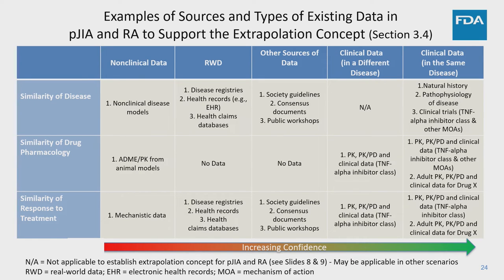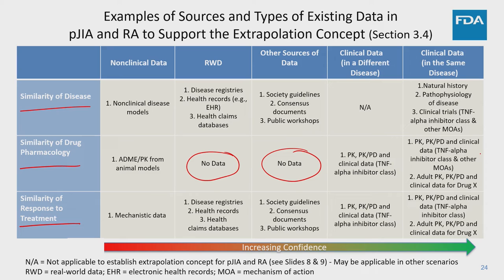If we map out the existing data across the three legs of the stool — similarity of disease, drug pharmacology, and response to treatment — and assess what types of data we have to support similarity, we find that for similarity of disease, we have lots of data available. For pharmacology, there are some areas where we may not have a lot of data, but we have data from clinical programs for other TNF-alphas for PJIA and RA. Overall, looking at this table from left to right representing increasing confidence, there is a lot of existing data that can support confidence in the similarity of disease and response to treatment in PJIA for TNF-alpha inhibitors.